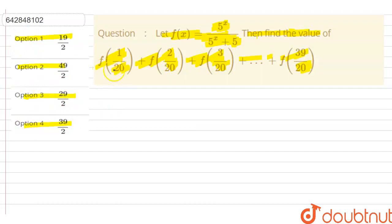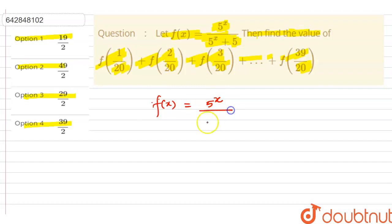We will find the value of this series. We can solve this by first writing the function: f(x) = 5 raised to power x, divided by 5 raised to power x plus 5.